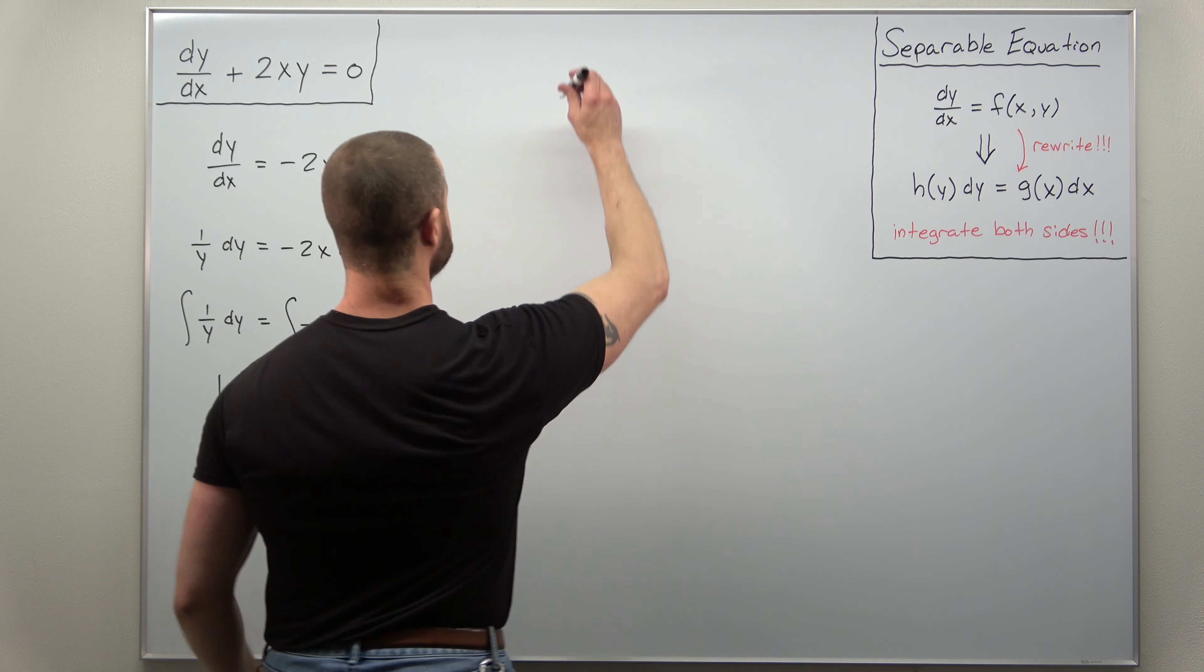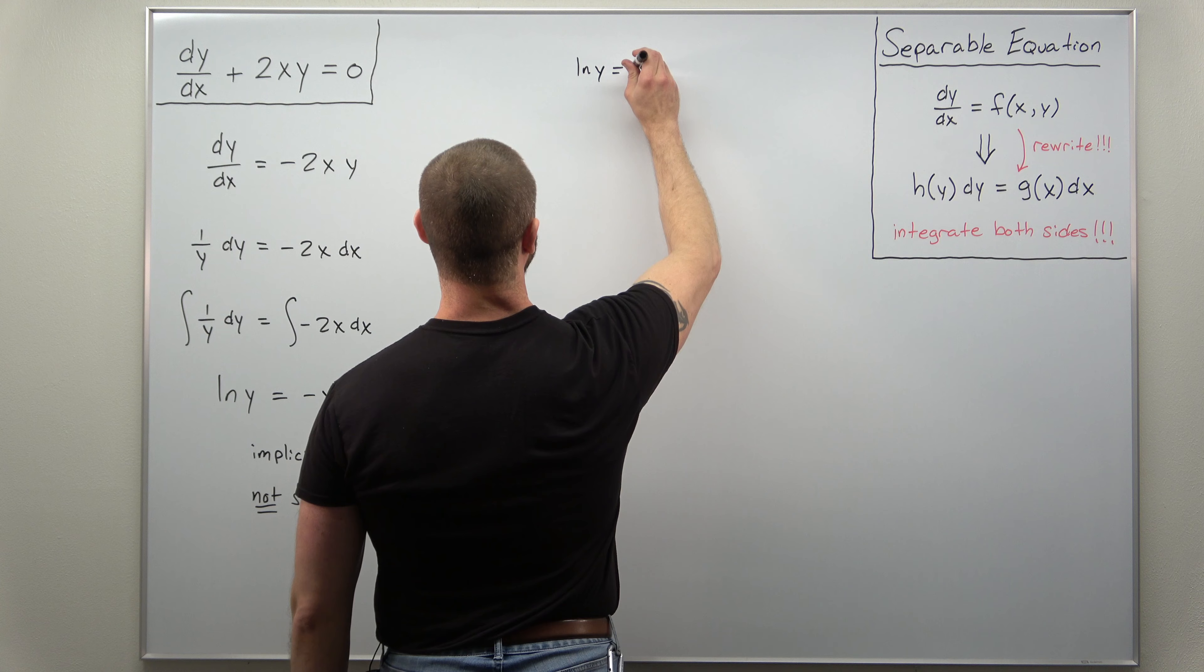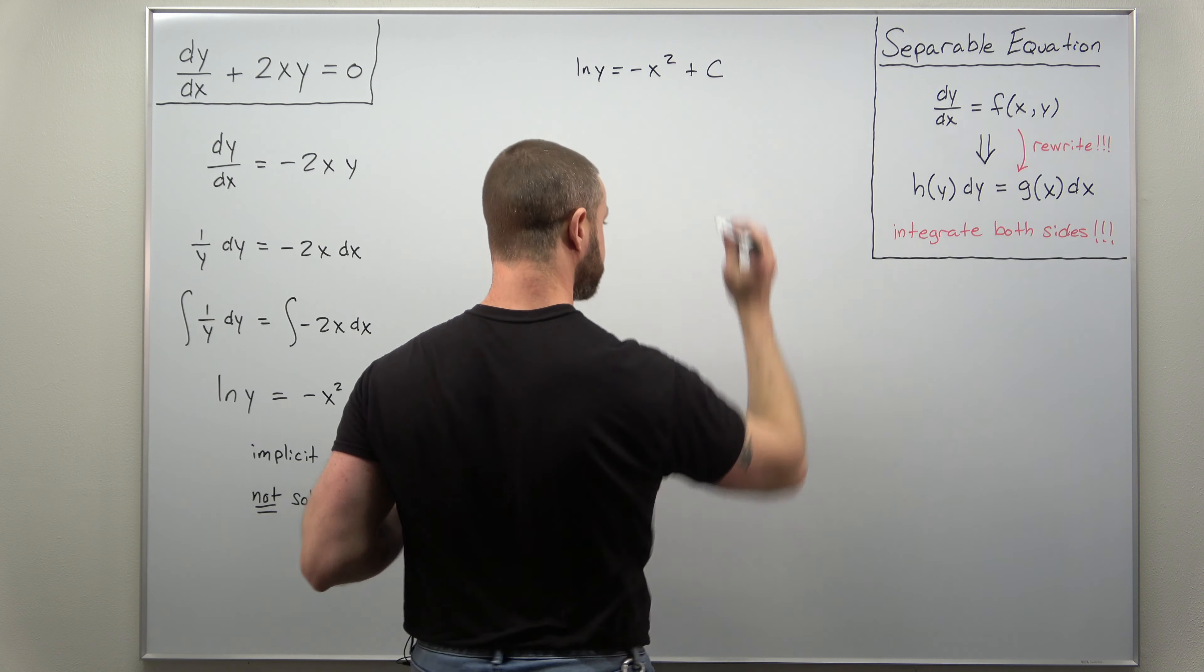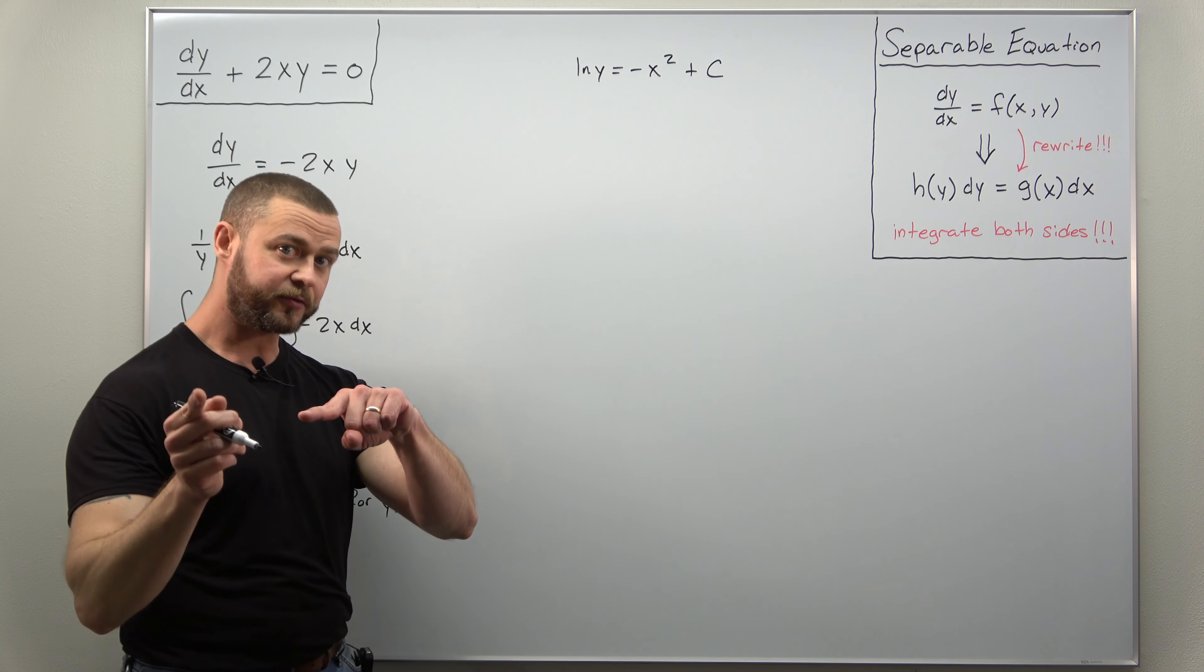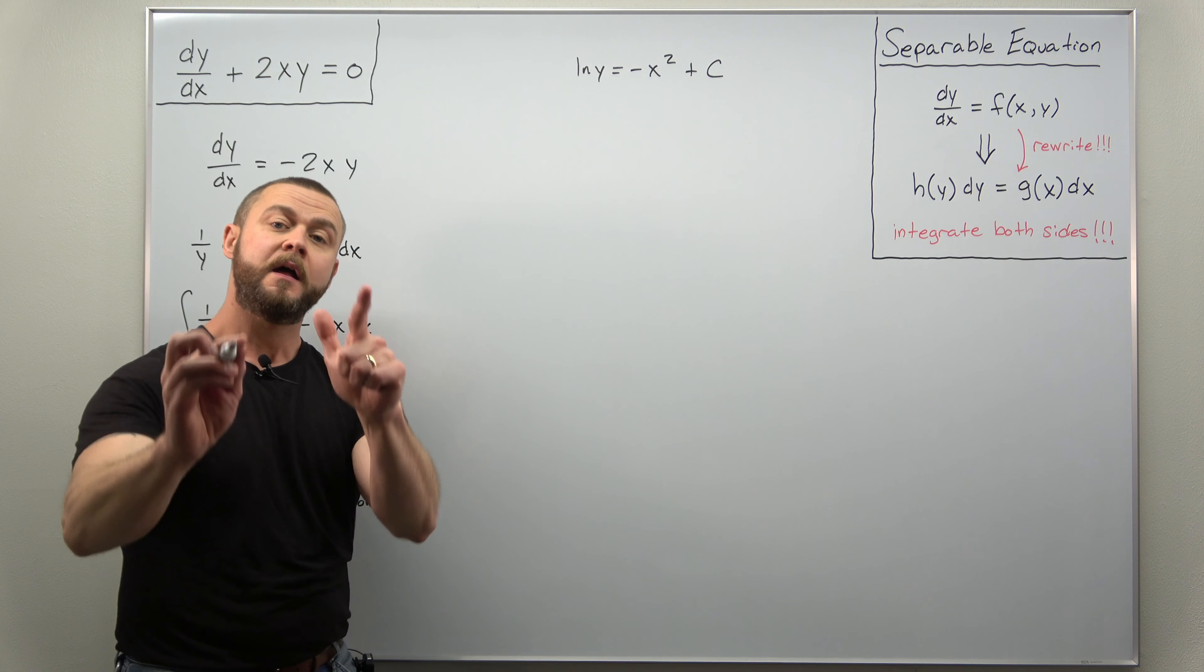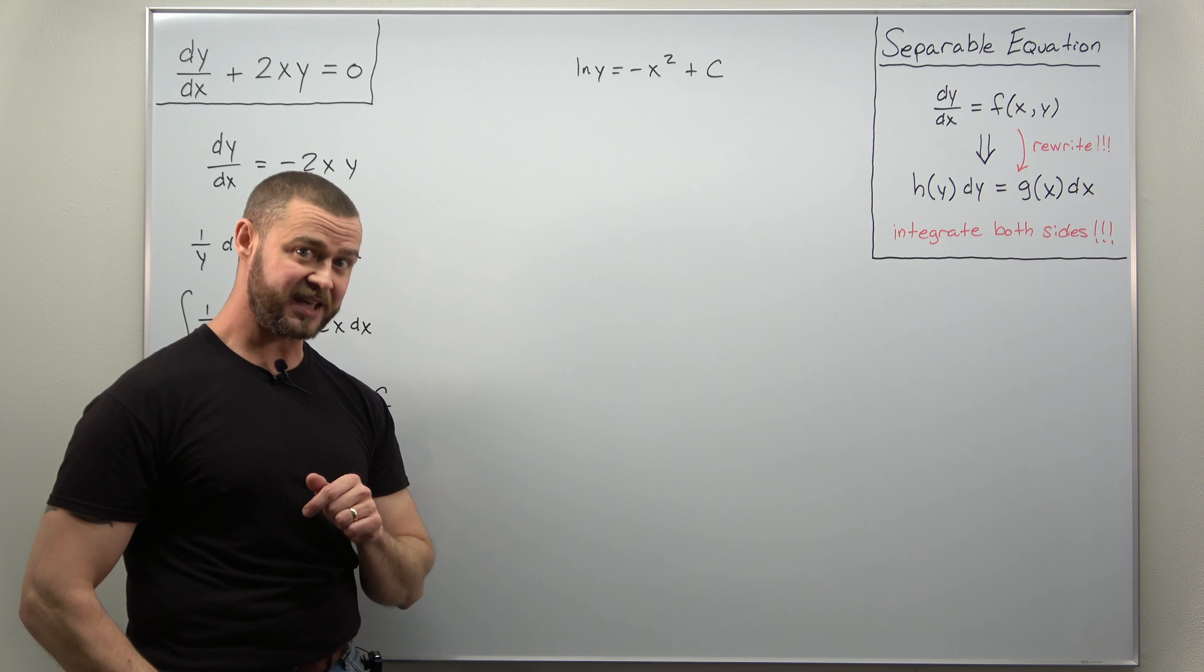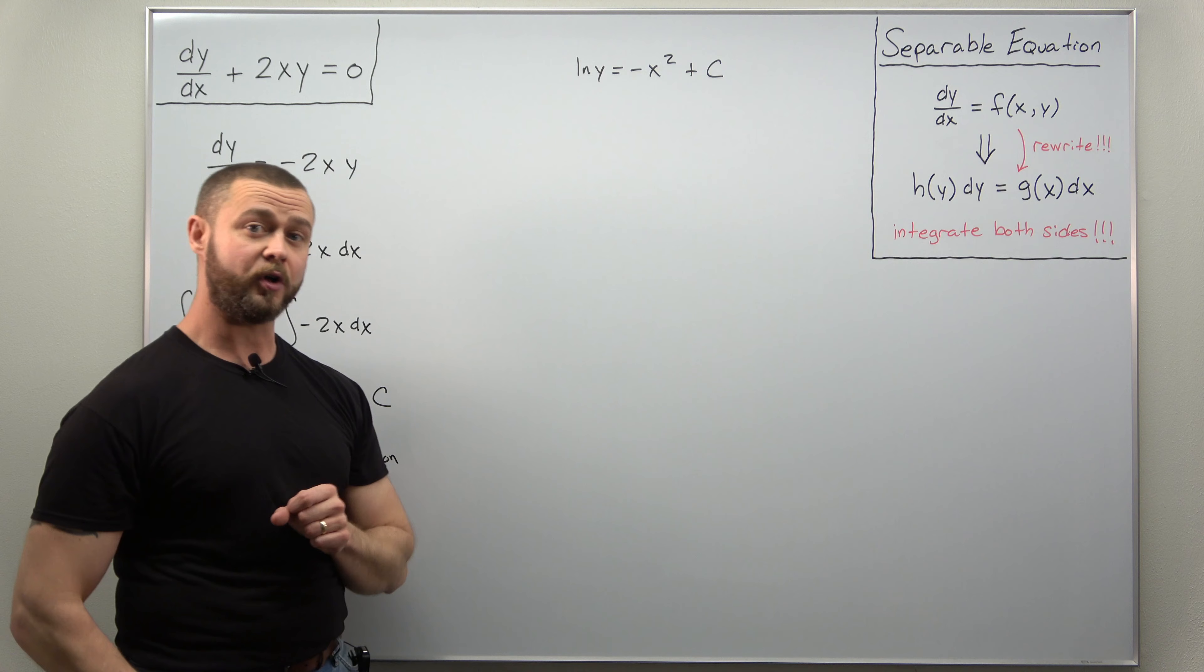So let's start with our equation here. Natural log of y equals negative x squared plus c. And our goal to solve for y? Let's cancel the natural log of y out. And to do that we're going to exponentiate each side using base e, the base of natural log.